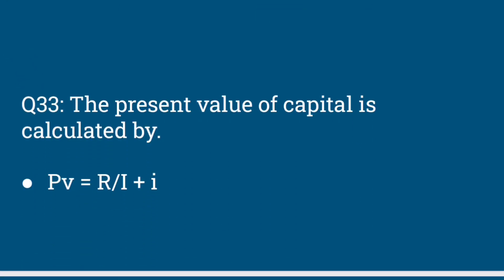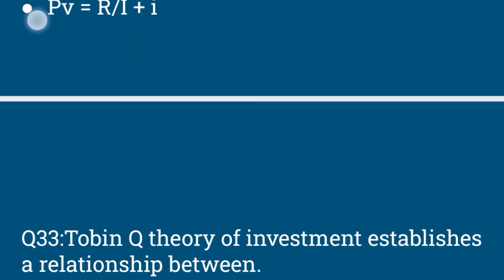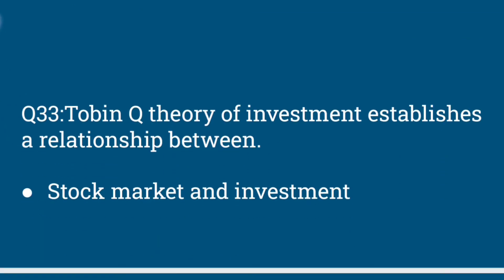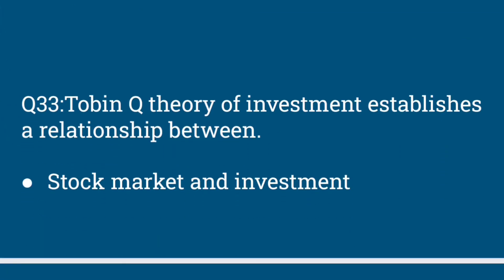The present value of capital is calculated by: PV = R / (1 + i), where i is the rate of interest. The Q theory of investment establishes a relationship between the stock market and investment.